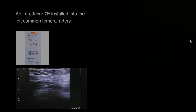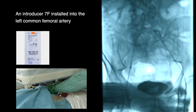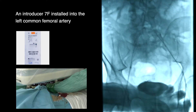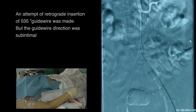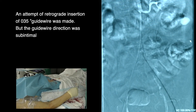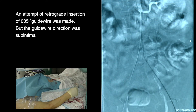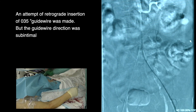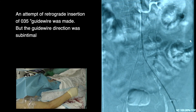A 7 French introducer was installed into the left common femoral artery. An attempt of retrograde insertion of a 0.35-inch guide wire was made, but the guide wire direction was subintimal.